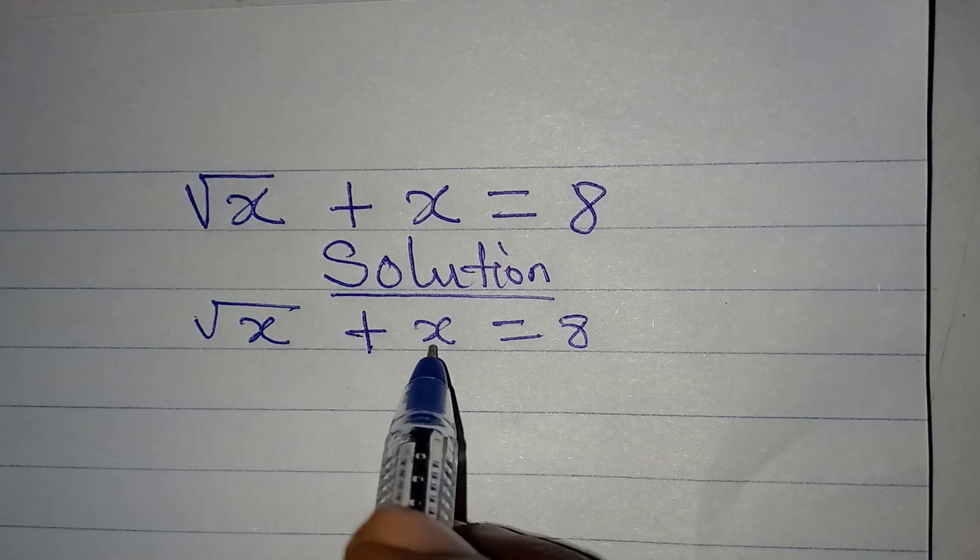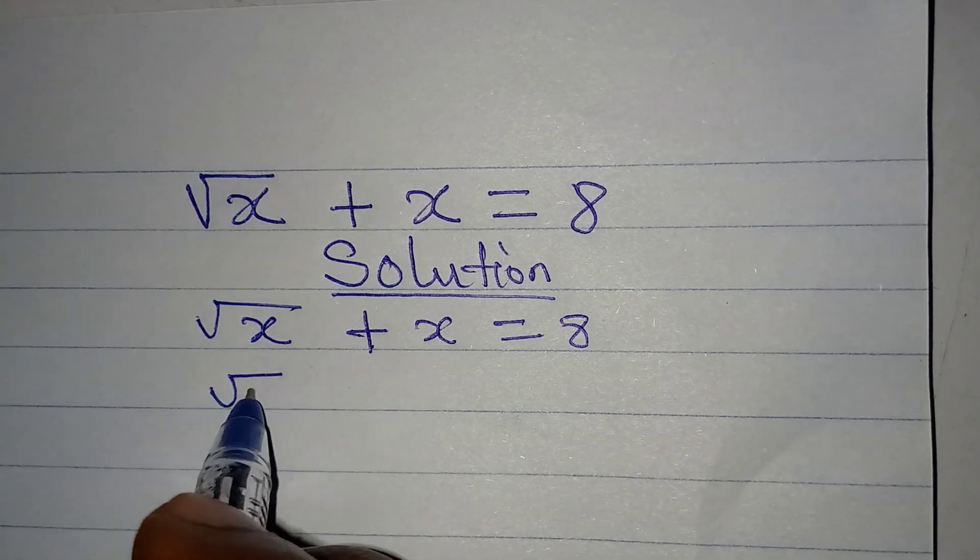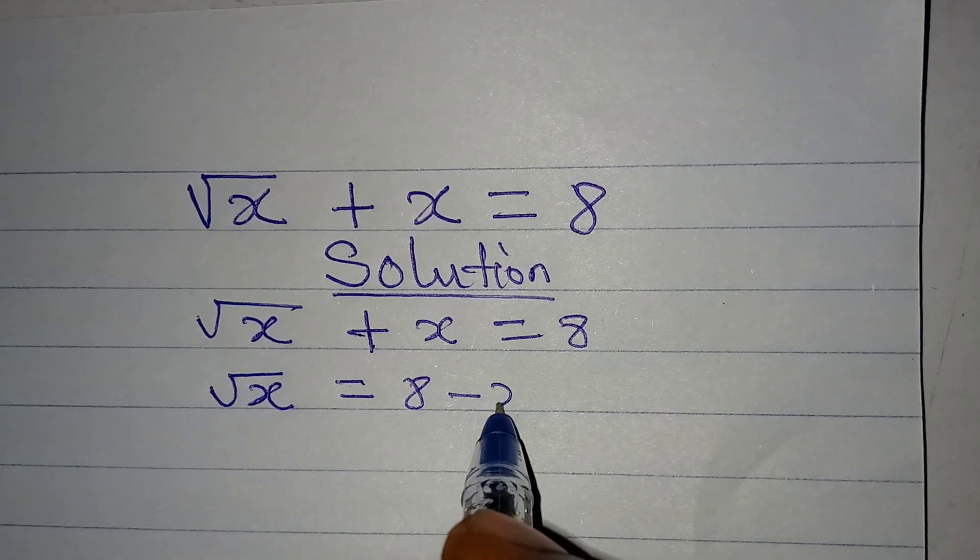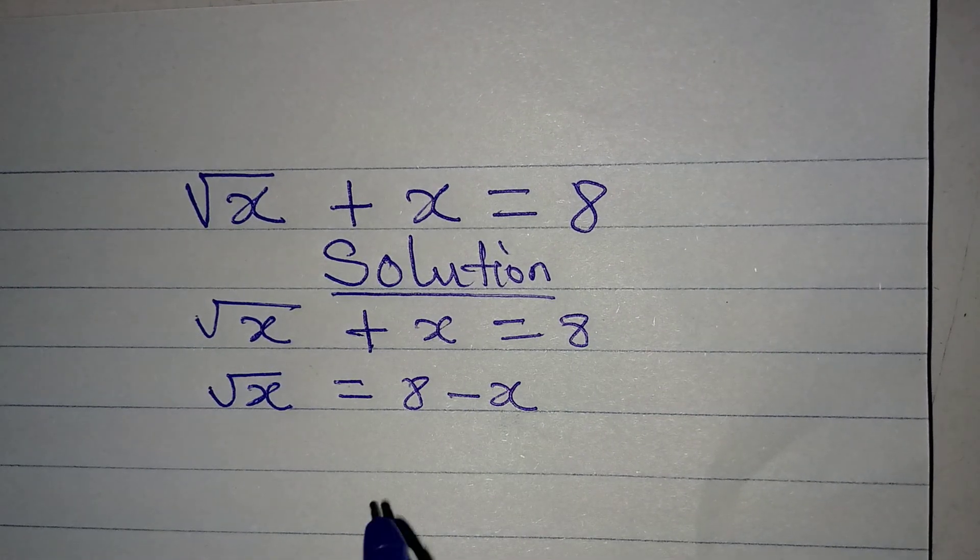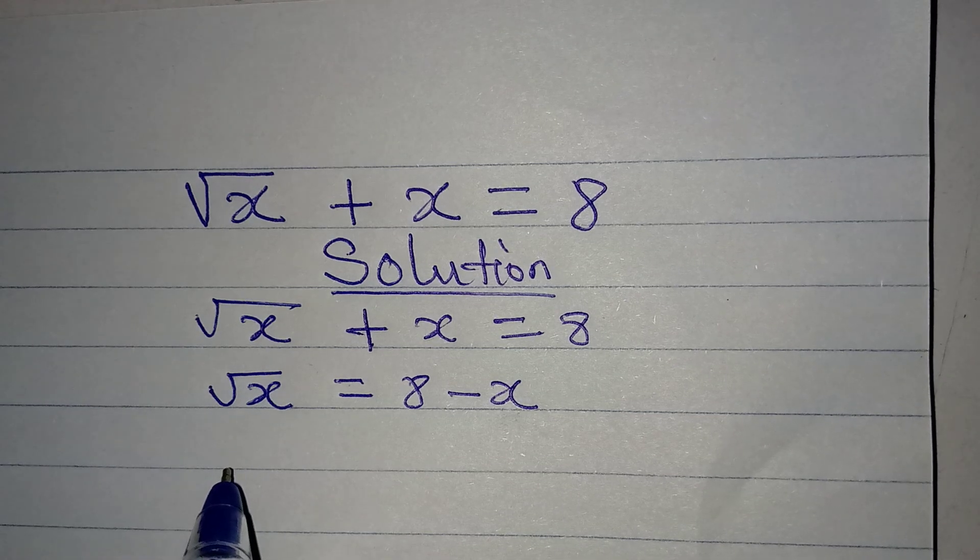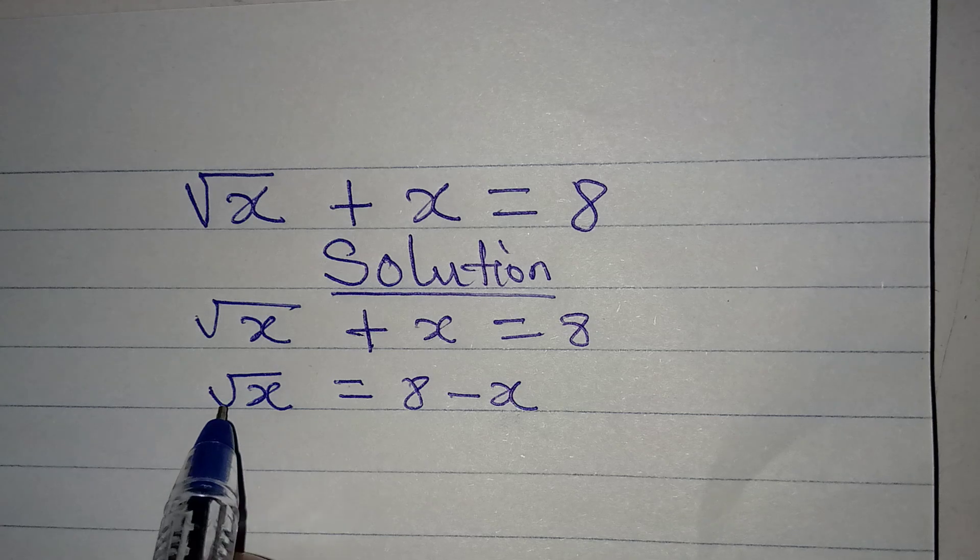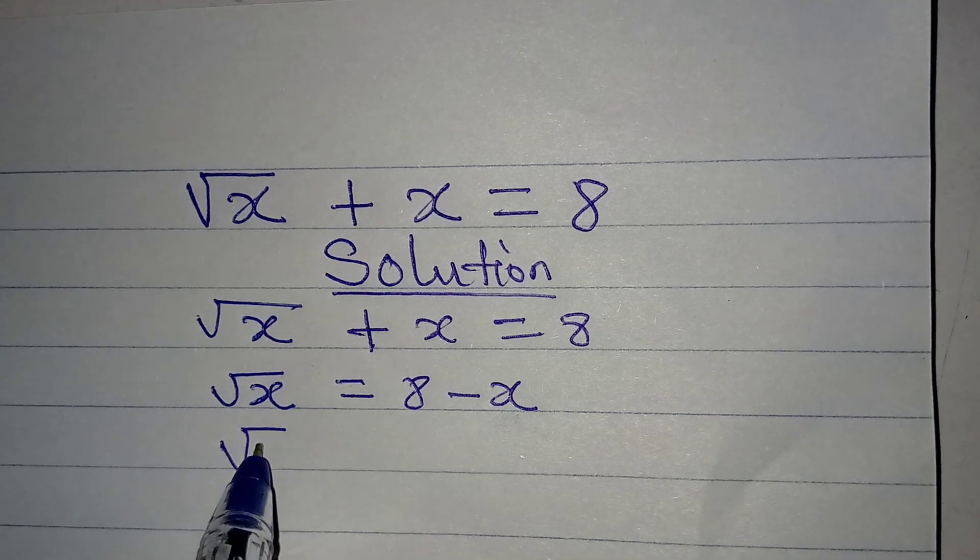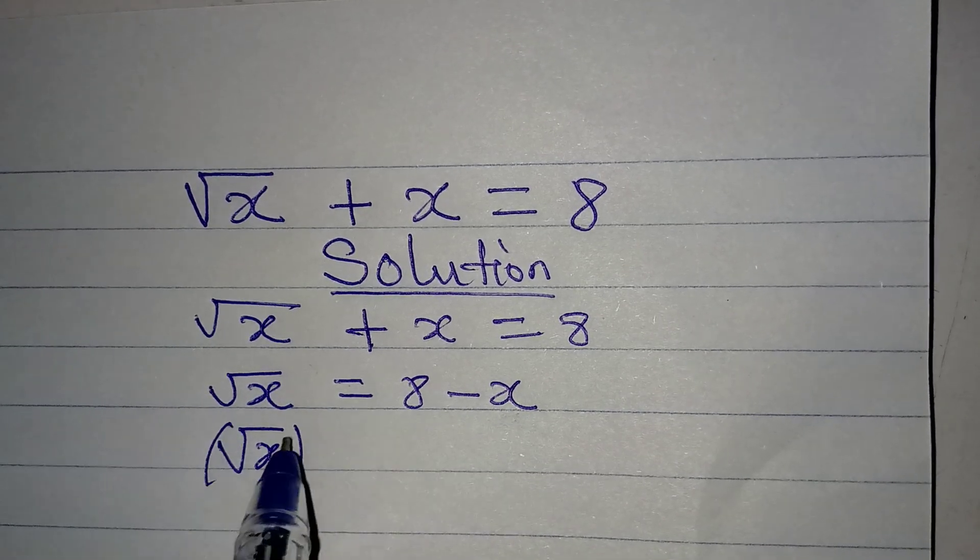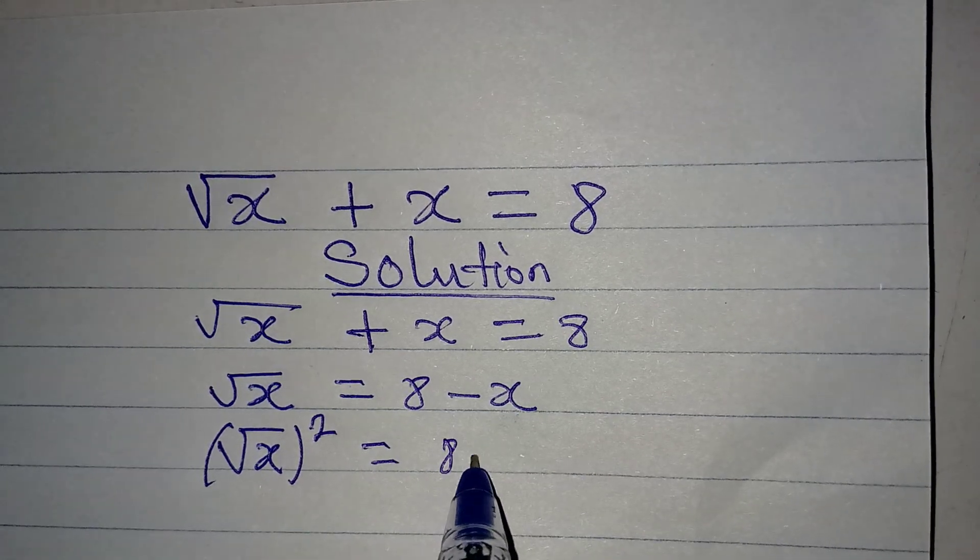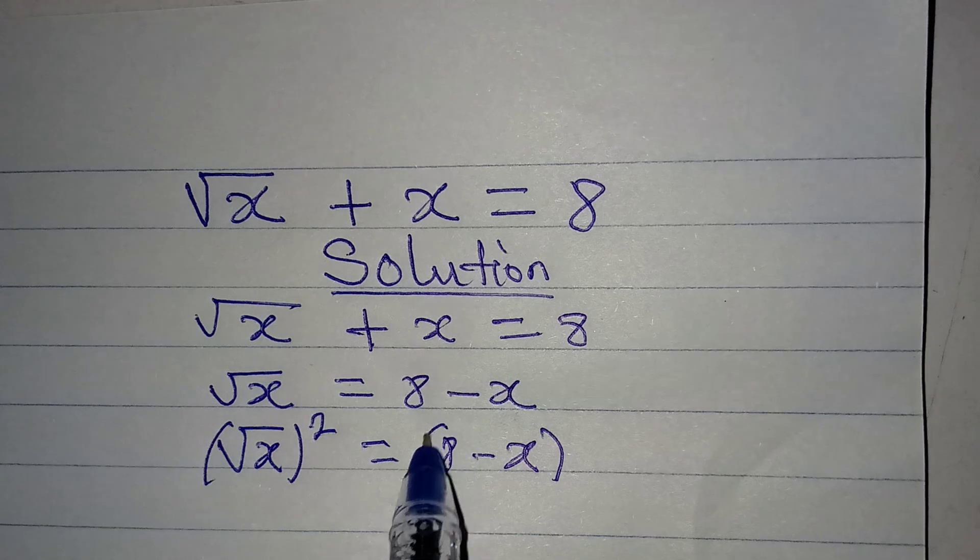Let's take x to the right. So we have square root of x to be equal to 8 minus x. And then from here, we need to remove this square root. To remove the square root, we have to square both sides. And then on the other side, I have 8 minus x squared.